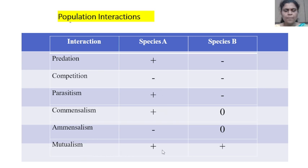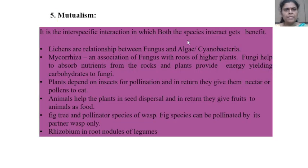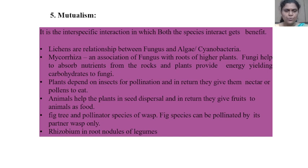Mutualism is the interspecific interaction in which both species interact and get benefits. Examples include lichens, mycorrhizae, plants that depend on insects for pollination and in return give nectar or pollen, and animals that help plants in seed dispersal and receive fruits as food. The fig tree and its pollinator wasp species can only pollinate each other. Another example is Rhizobium in the root nodules of legumes.